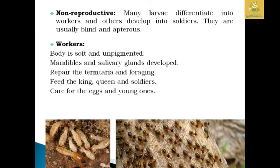For non-reproductives, some larvae differentiate into workers and others develop into soldiers. They are usually blind and apterous — wingless. The workers have a soft body, and their mandibles and salivary glands are well developed. They are mainly responsible for repairing the termitarium and foraging. They also feed the queen, king, and soldiers, and take care of eggs and young ones in the colony.